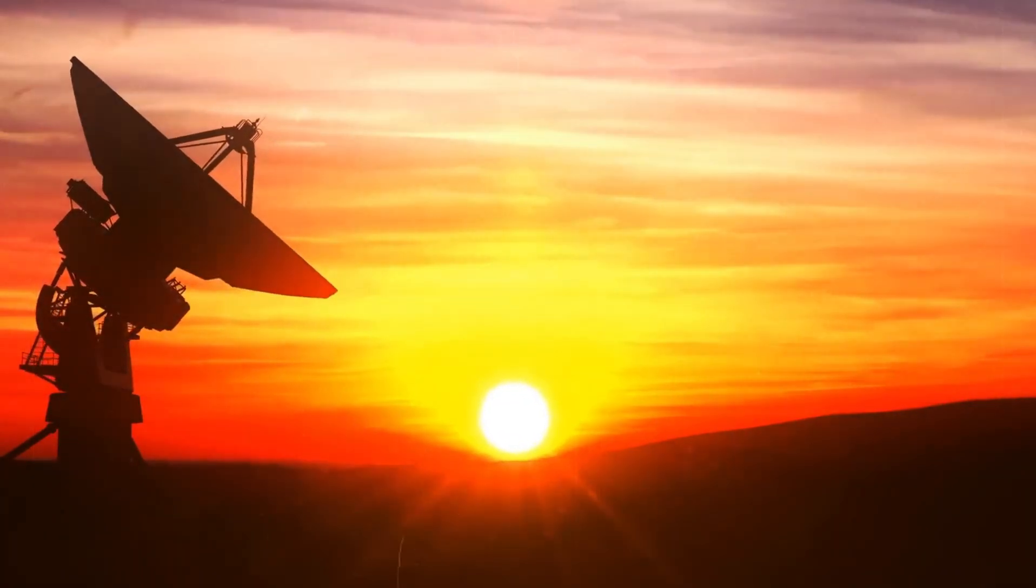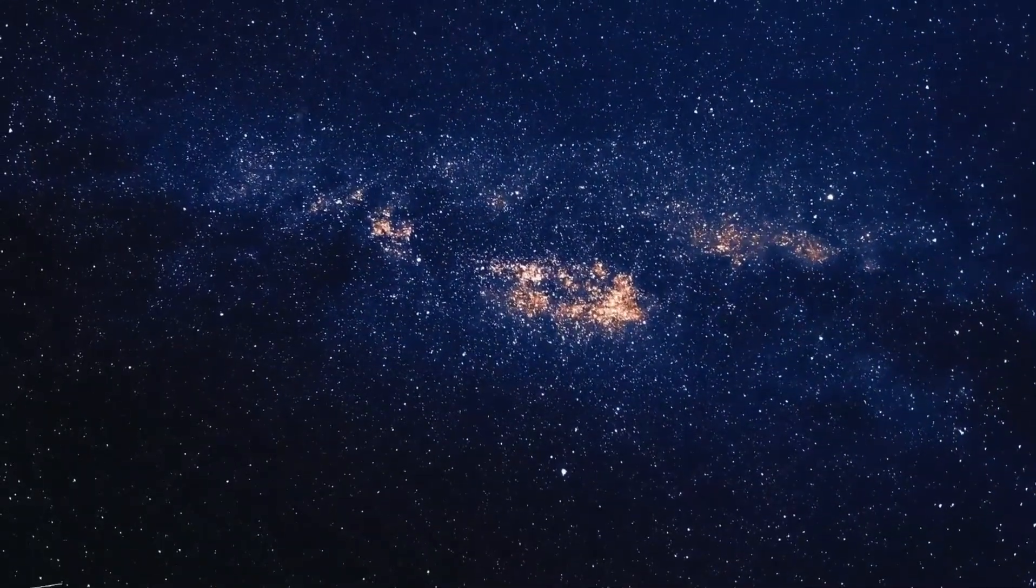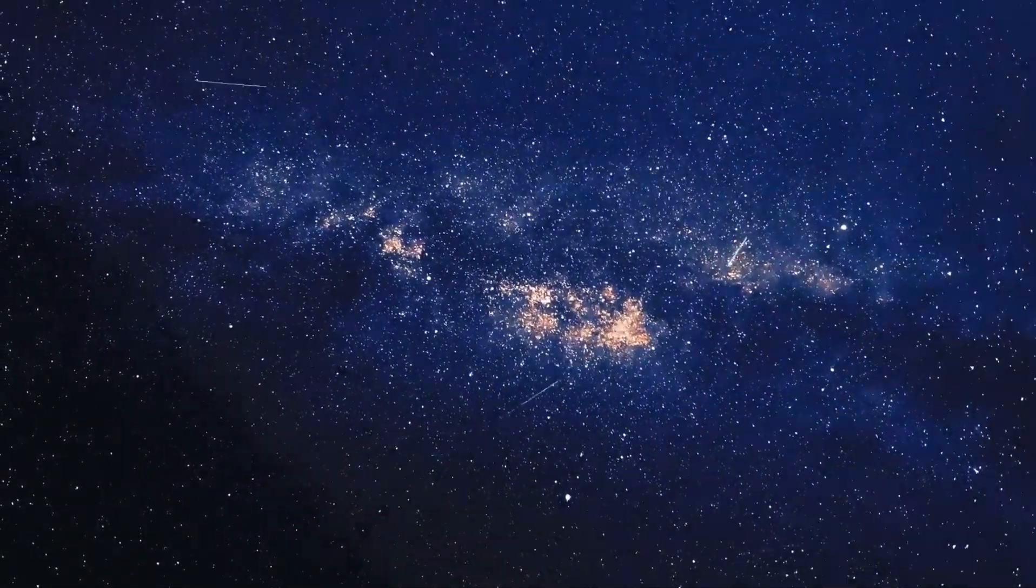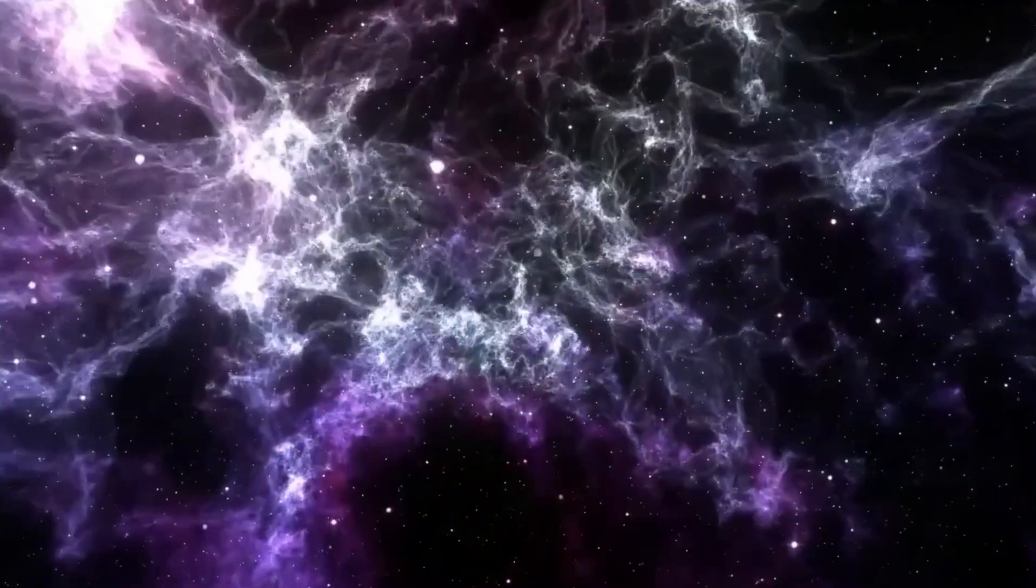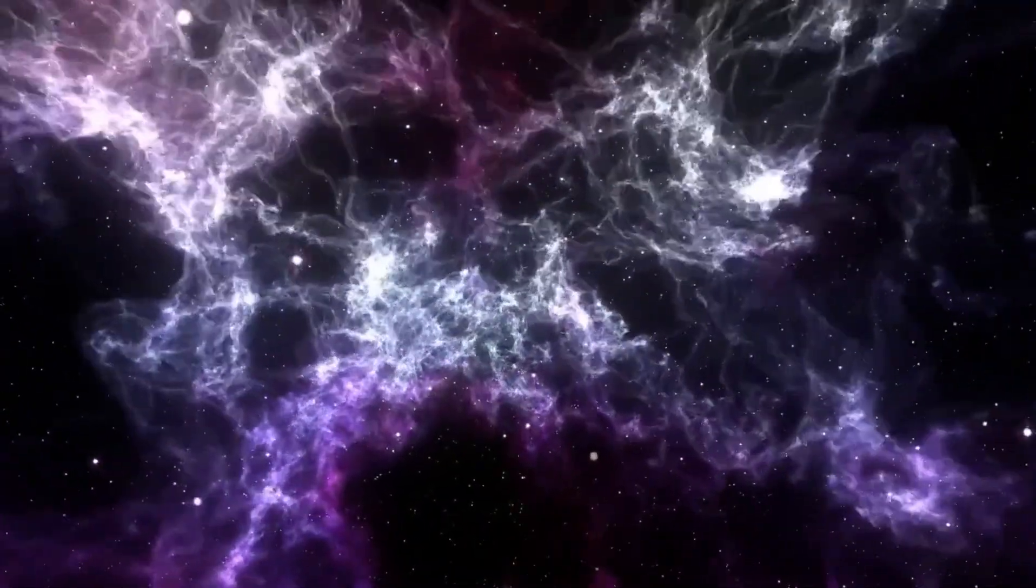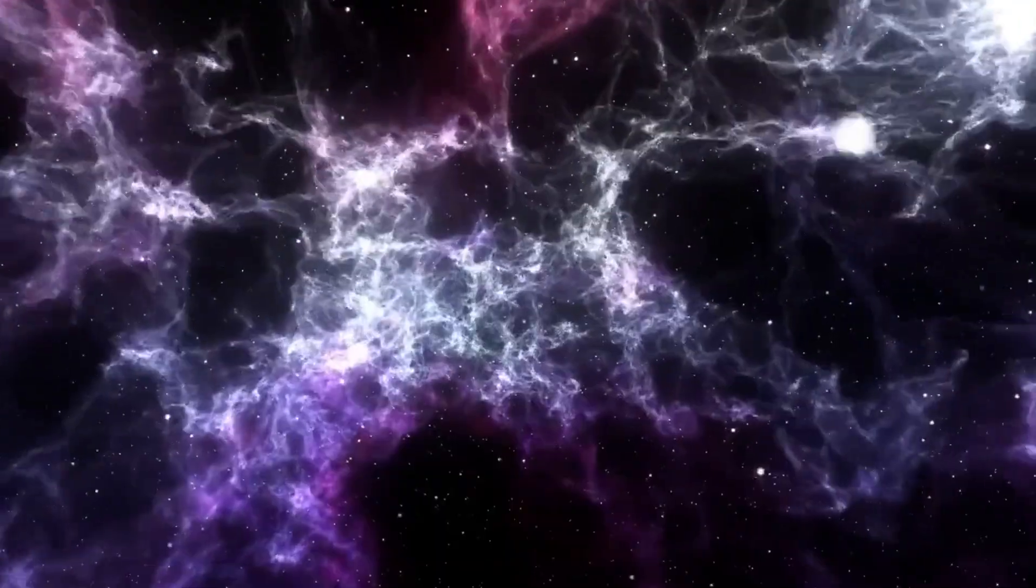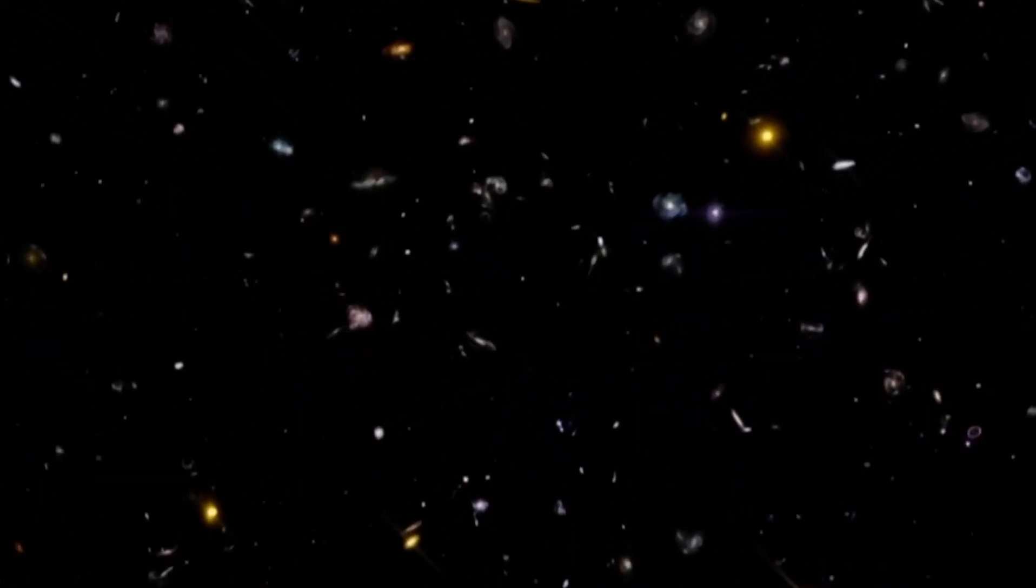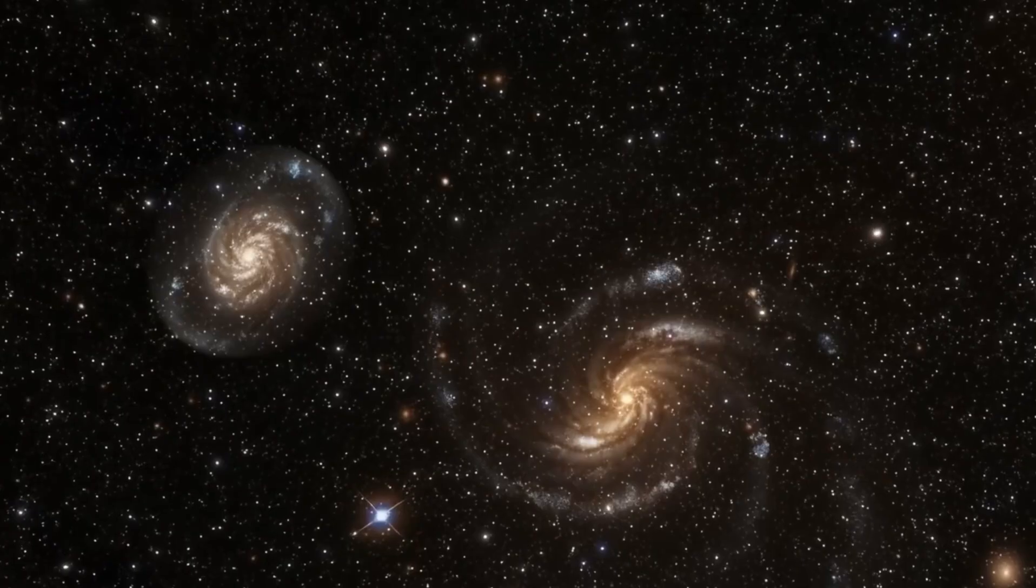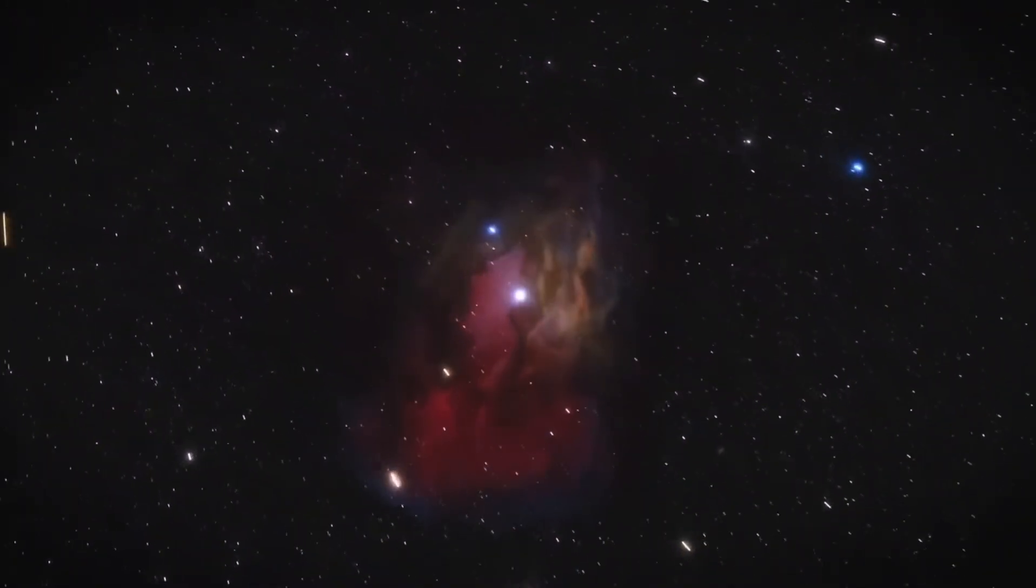As we continue our journey through the cosmic deserts, we encounter yet another mysterious expanse of emptiness. Welcome to Canes Venatici Supervoid. This supervoid located in the constellation of the Hound Dogs is a compelling illustration of the scale and vastness of our universe. Canes Venatici Supervoid like its counterparts is in a region of space with significantly fewer galaxies than expected.